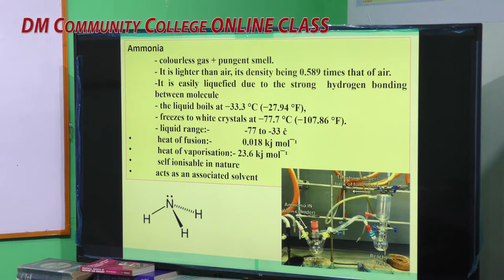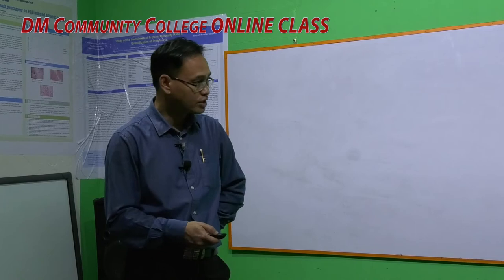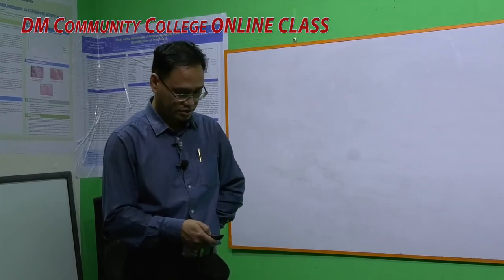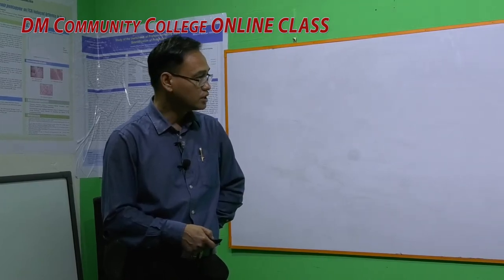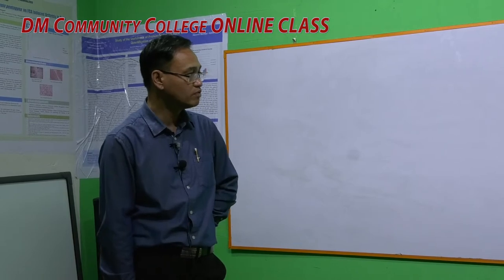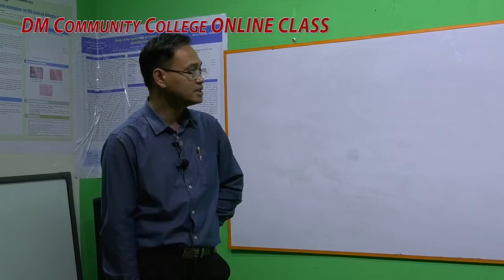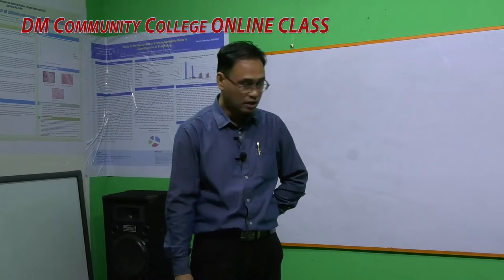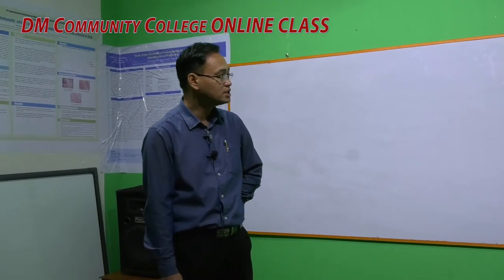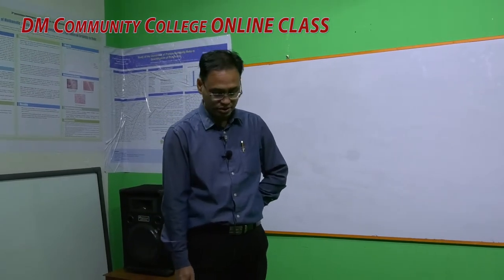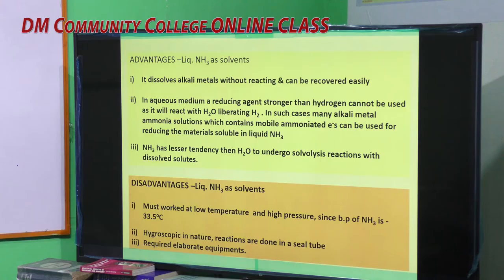Advantages of liquid ammonia as a solvent: First, it dissolves alkali metals — that is, Group 1 metals such as lithium, sodium, potassium, rubidium, and cesium — without reacting with them, and these metals can be easily recovered by simple evaporation.